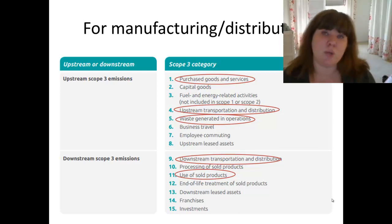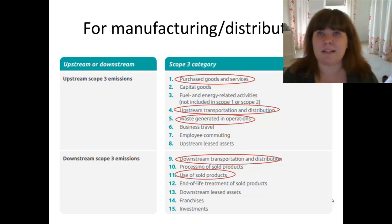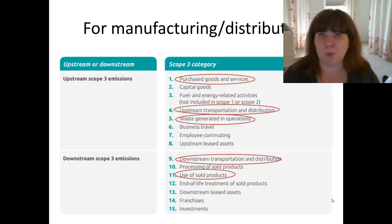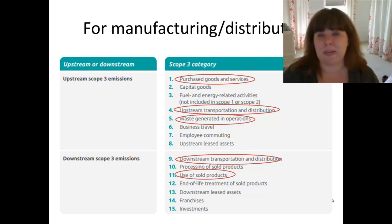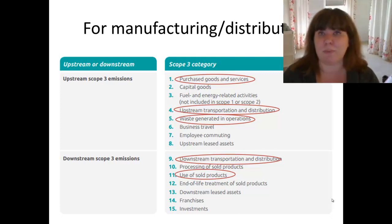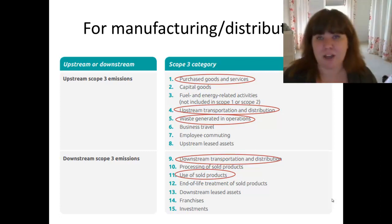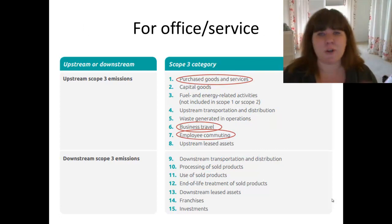You also want to be considering the use of sold products — especially if you are selling something that requires energy or additional materials to operate. For example, dishwashing soap, a car, or a vehicle. The chances are that a quite significant percentage of the overall impact of your product or service will, in fact, be in the consumer use phase when people are actively using your product. Those are some of the key ones if you're a manufacturing or distribution firm.